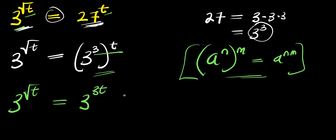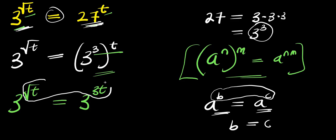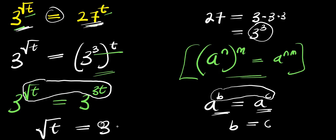Now observe this other identity: if you have a to the power of b and this equals a to the power of c, we can equate the exponents, knowing fully well that the bases are the same. So b equals c. That means we can equate root t equals 3t. So we have square root of t equals 3t.